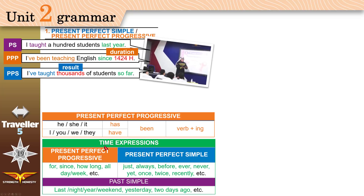Use these time expressions with Present Perfect Progressive: 'for' and 'since.' What is the difference? You use 'for' with a number of years or amount of time. You can say 'I've been teaching English for 15 years.' Use 'since' with a point of time.